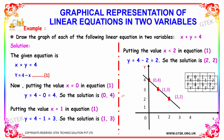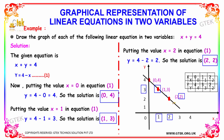Based on the answers obtained by substituting x as 0, 1, and 2, we can now plot the graph. The first point is (0, 4) — x is 0 and y is 4. The second point is (1, 3) — x is 1 and y is 3. The third point is (2, 2) — x is 2 and y is 2. This is how we draw the graph for a linear equation in two variables.